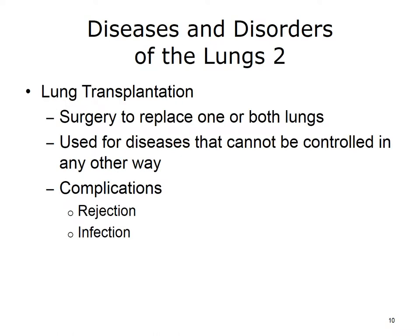Treatment for diseases of the lung might include lung transplantation, which is surgery to replace one or both diseased lungs with a healthy lung or lungs from a donor. The physician may recommend a lung transplant for diseases that cannot be controlled any other way, including chronic obstructive pulmonary disease, cystic fibrosis, idiopathic pulmonary fibrosis, and primary pulmonary hypertension. Complications include rejection of the transplanted lung and infection.